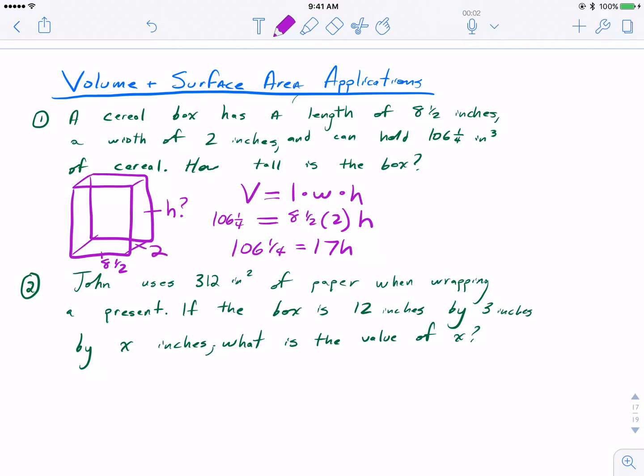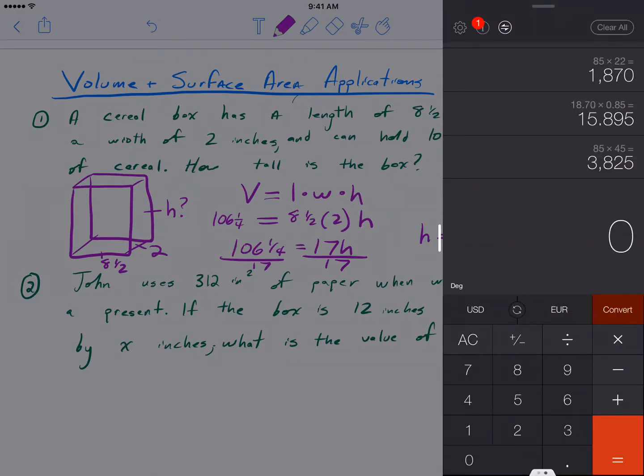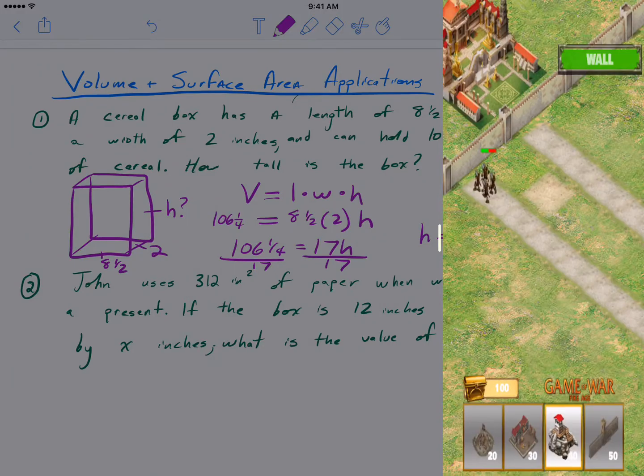Eight and a half times two is nicely 17, and then 17 into 106 and a quarter. We would divide both sides by 17. 17 goes in six full times, that's 102, leaving four and a fourth, which is exactly one-fourth. This would be something that you would use your calculator, so I'm just going to double check myself.